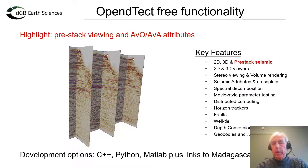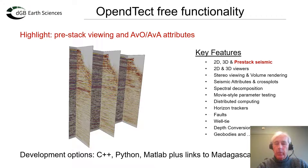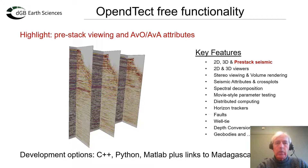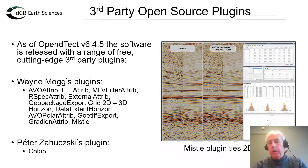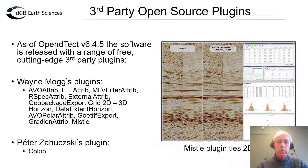You can pay a lot of money for systems that offer pre-stack capabilities — OpenDetect offers this for free. We have viewers in 3D but also flat 2D viewers, and you can use the functionality for AVO and AVA attribute calculations. OpenDetect can also be extended with free plugins developed by the open source community, and we are now releasing a number of these free plugins with the software for more functionality.